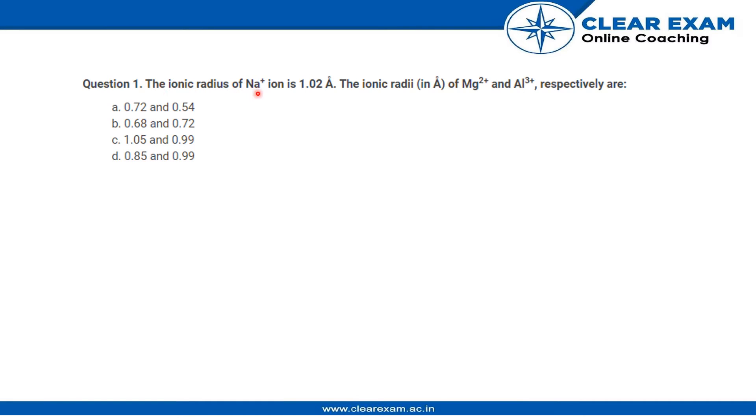The question says the ionic radius of Na+ ion is 1.02 angstrom. The ionic radii of Mg2+ and Al3+ respectively are... So we cannot calculate these values directly. We have to determine the relation between these three - whether something will be greater than or less than the others.